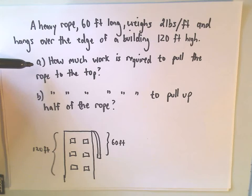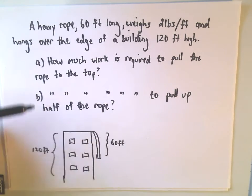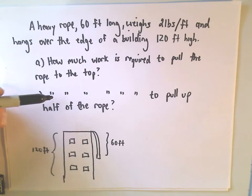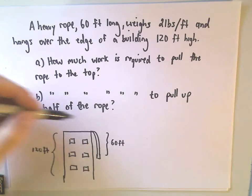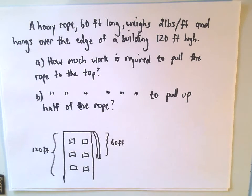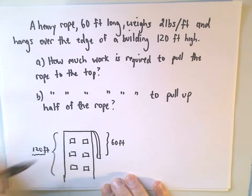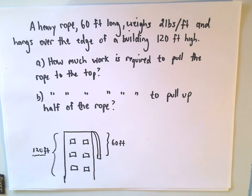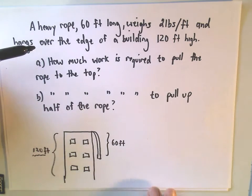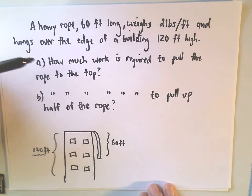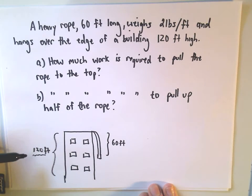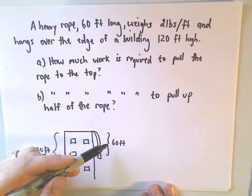Two things. Part A, how much work is required to pull the rope all the way to the top? And in part B, how much work is required to pull up half of the rope? And I think B is kind of an interesting question. The fact that the building is 120 feet is not completely irrelevant in this problem. What's important about the fact of the building is that it's taller than the rope is long.